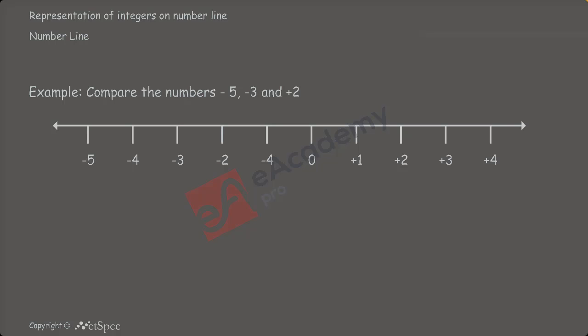After marking, let us compare which number lies to the right of the other numbers. Observing carefully, we see that the number plus 2 is lying to the right side of the number minus 3. So, obviously, plus 2 is greater than minus 3. Similarly, minus 3 is lying to the right of the number minus 5. So, minus 3 is greater than minus 5.